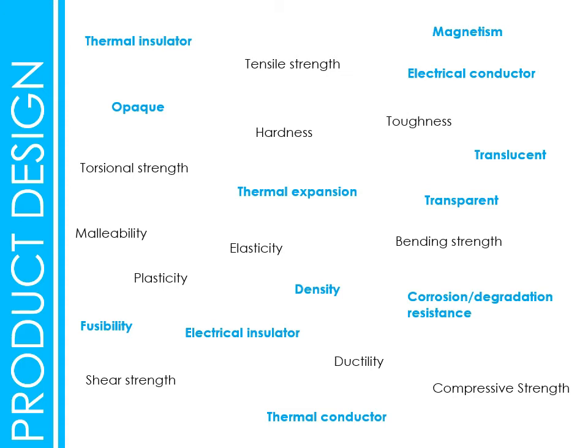Translucent means you can see some light through it, almost like a frosted effect. Transparent means completely see-through. Density is about how much of a certain material there is within a measured amount — how densely packed the molecules are together. It's nothing to do with weight; it's about how tightly packed the molecules are.